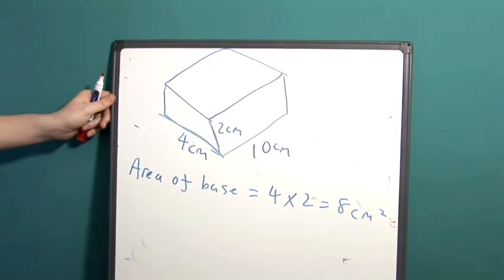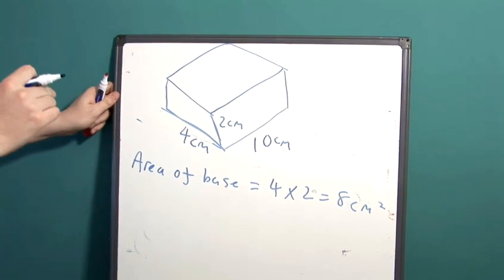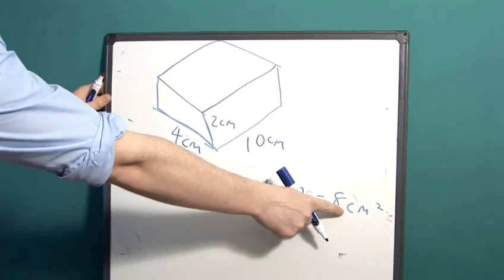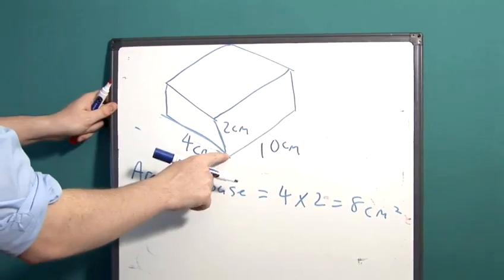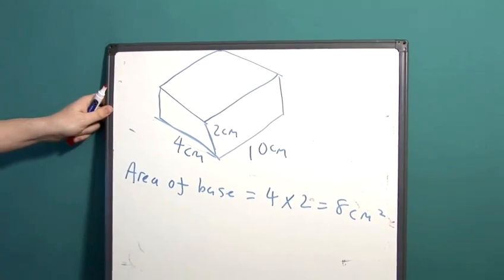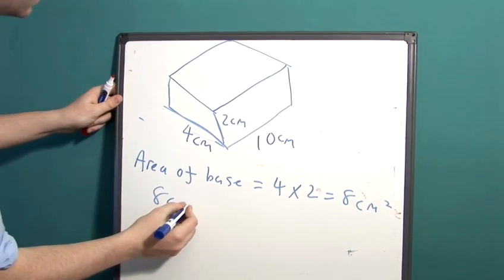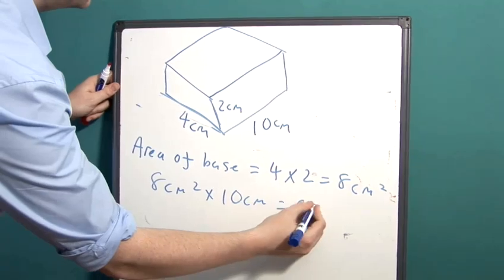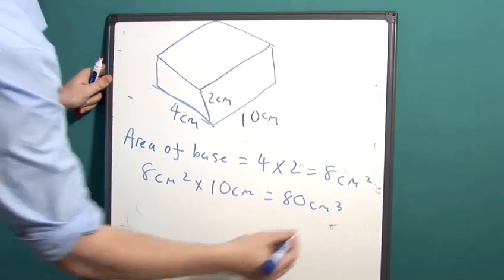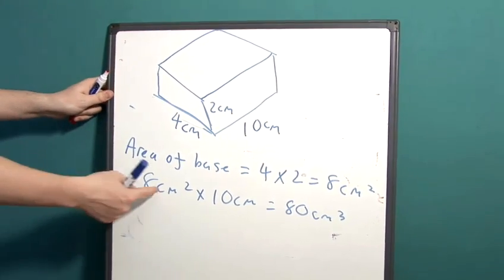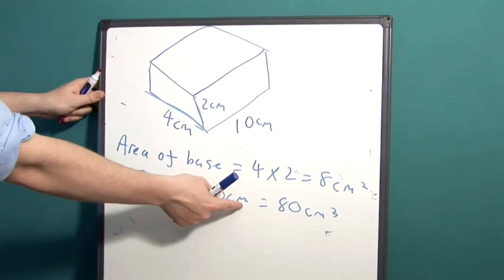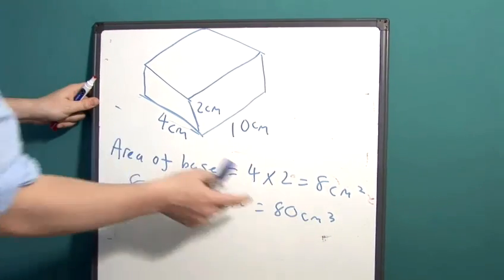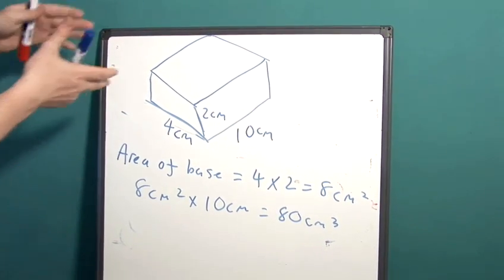The final step to find the volume of the prism is to multiply this number by the length of the prism. 8cm squared multiplied by 10cm is 80cm cubed. Remember, centimetre squared multiplied by centimetres gives us centimetre cubed, and that makes sense because we're dealing with a 3D object.